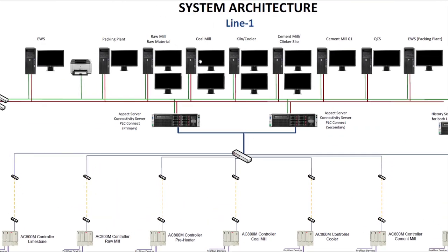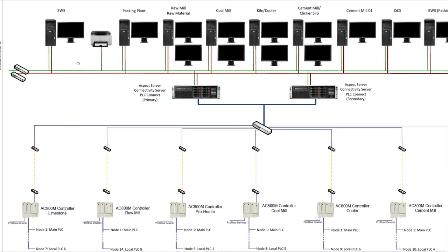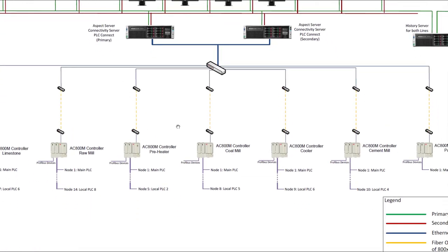The engineering station holds all the PLC programs. We can monitor the PLC programs from this engineering workstation, and we can download the PLC program from the engineering workstation to the specific PLCs. If we want to modify a PLC program or make any modifications according to the process requirement, we download the program to the PLC through the engineering workstation. We can also upload and read the program from the PLCs through the engineering workstation.